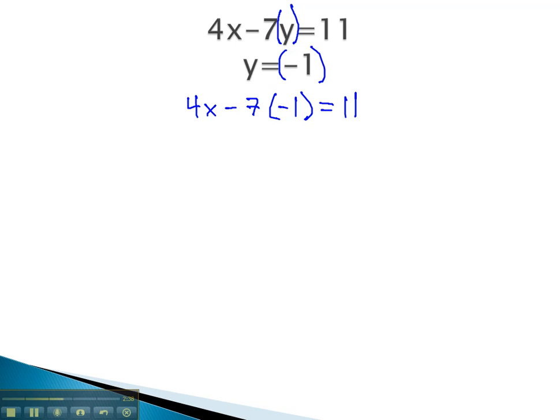We can begin solving by first multiplying the negative 7 and negative 1 to get 4x plus 7 equals 11. Begin isolating by subtracting 7 from both sides, and we get 4x is equal to 4. Finally, divide both sides by 4 to get our variable alone, and we now know that x is equal to 1.